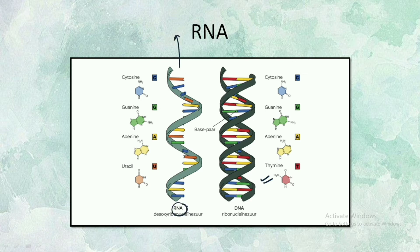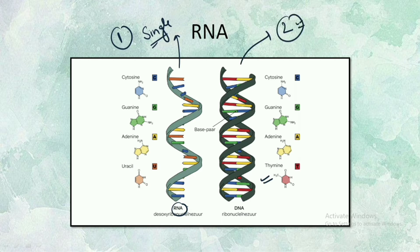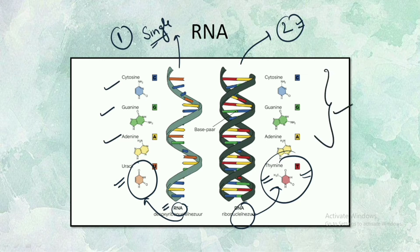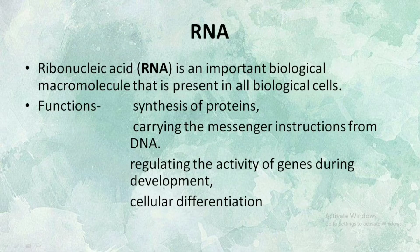The first important thing about RNA is that it is single-stranded, that is it contains only one strand. In case of DNA we have two strands, but in case of RNA we have only one strand. The second unique feature to remember is that RNA contains uracil, whereas in DNA we have thymine. Cytosine, guanine, and adenine are the same in both DNA and RNA. The only difference is uracil in RNA and thymine in DNA.